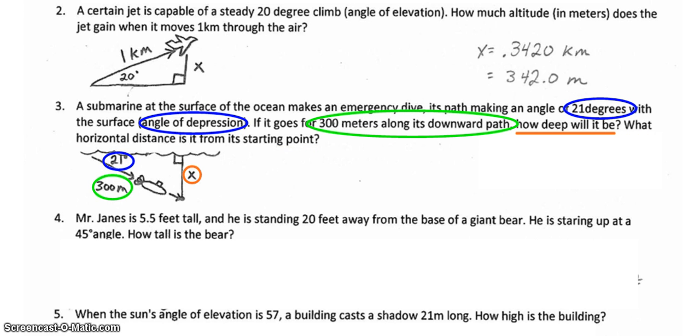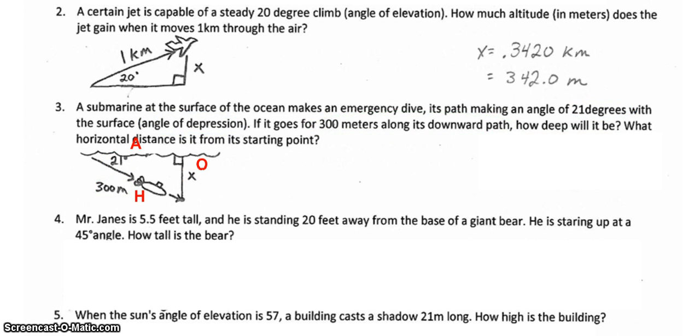I've created a diagram and labeled it. Notice that 21 degree angle of depression is starting at the water surface and angling downward, depression moving down, and the 300 meters along this downward path is that diagonal, that hypotenuse that the submarine is taking. The x is the depth, how deep will it be, that first question. Next, I can label my sides with adjacent, opposite, and hypotenuse.